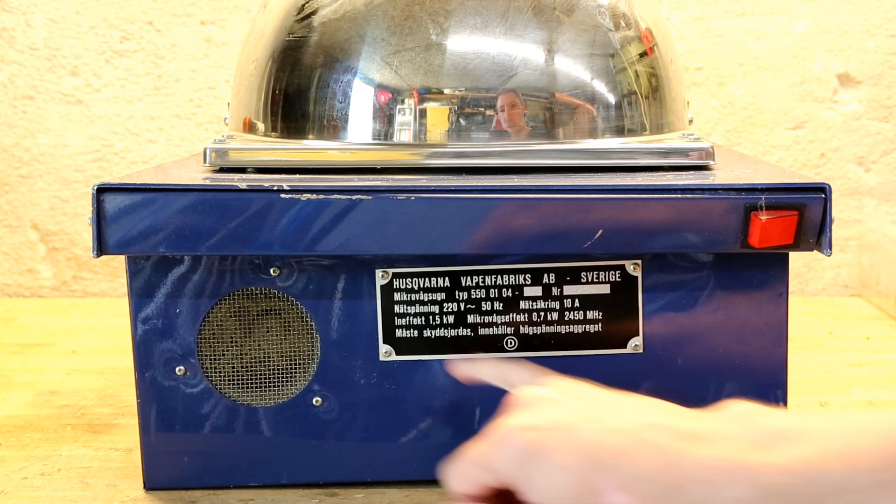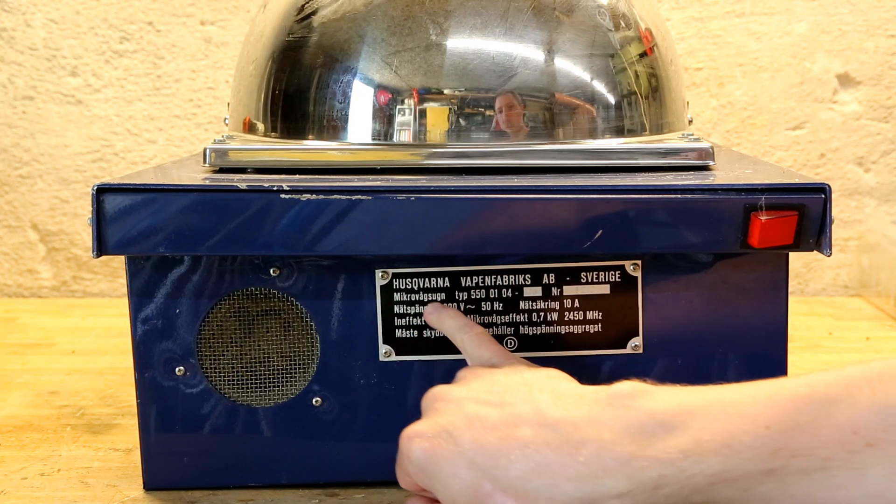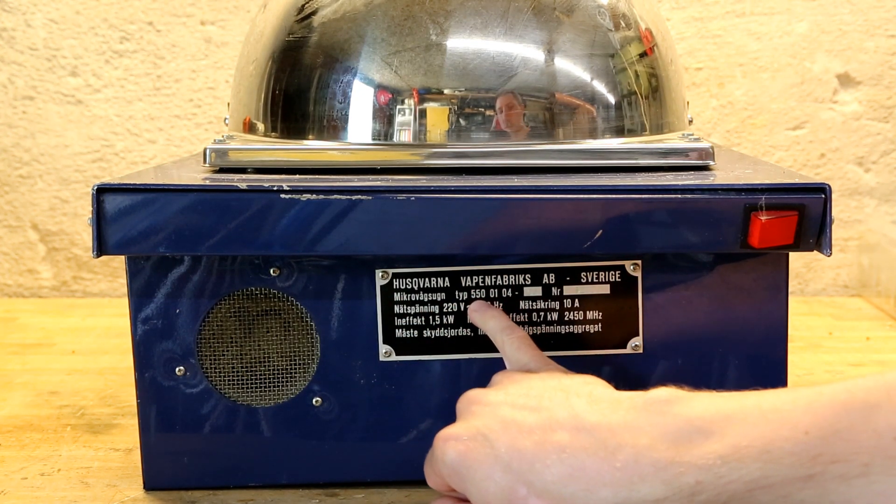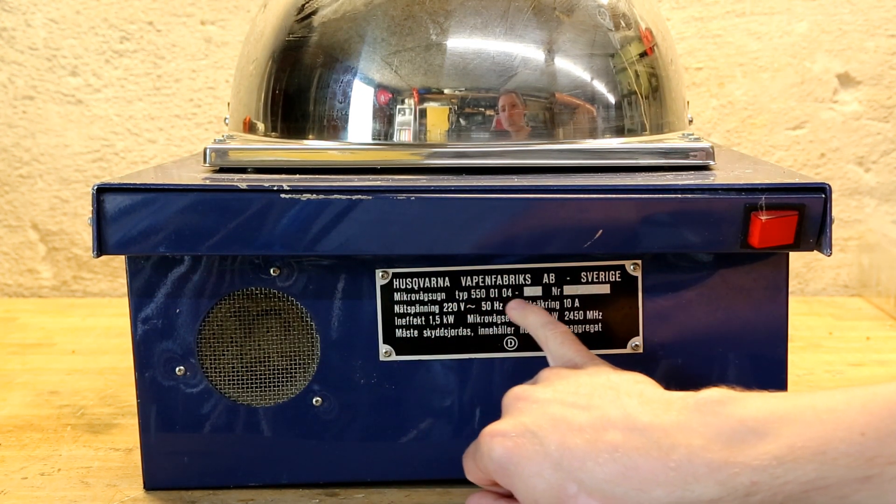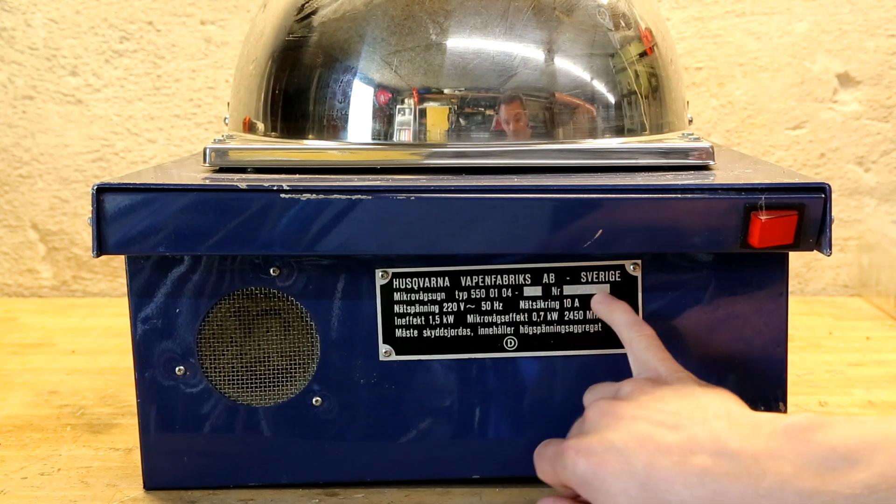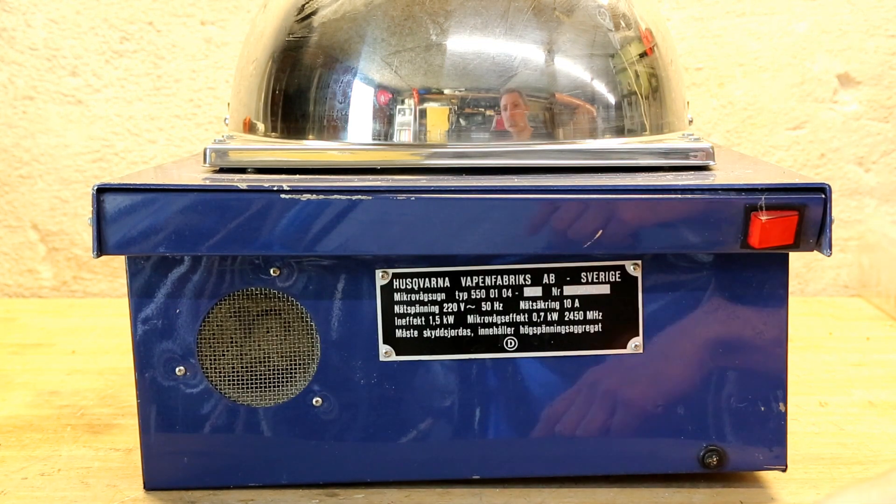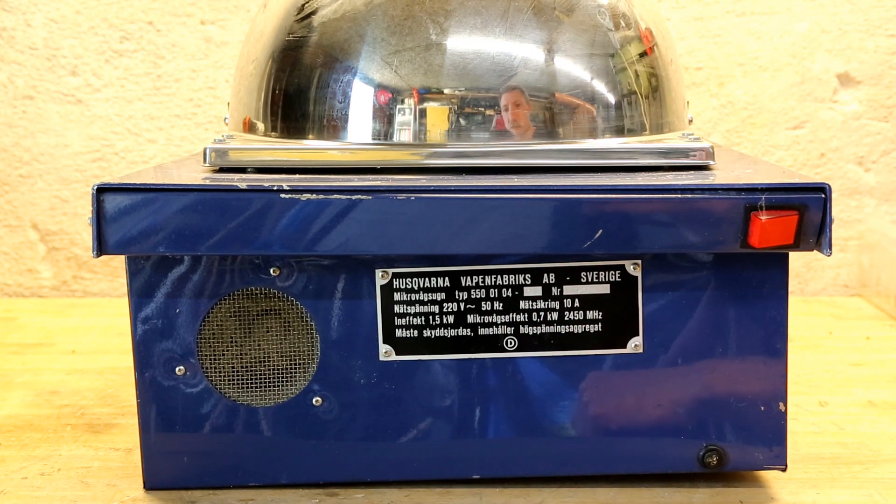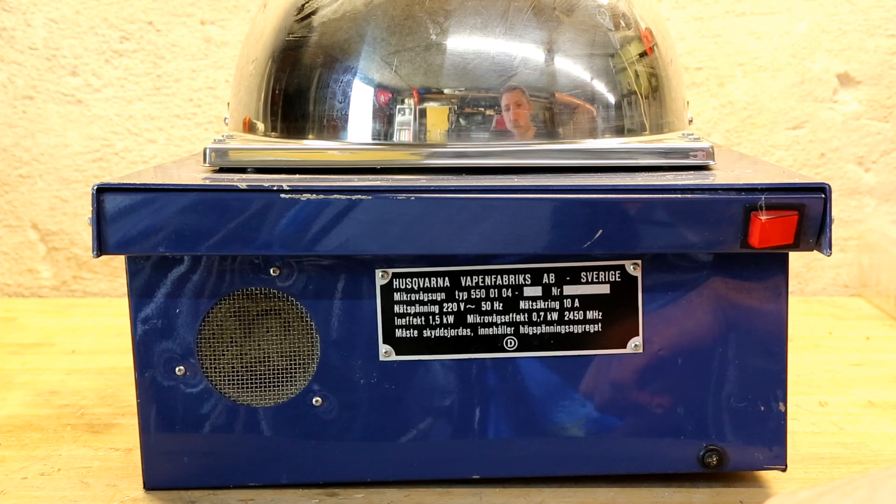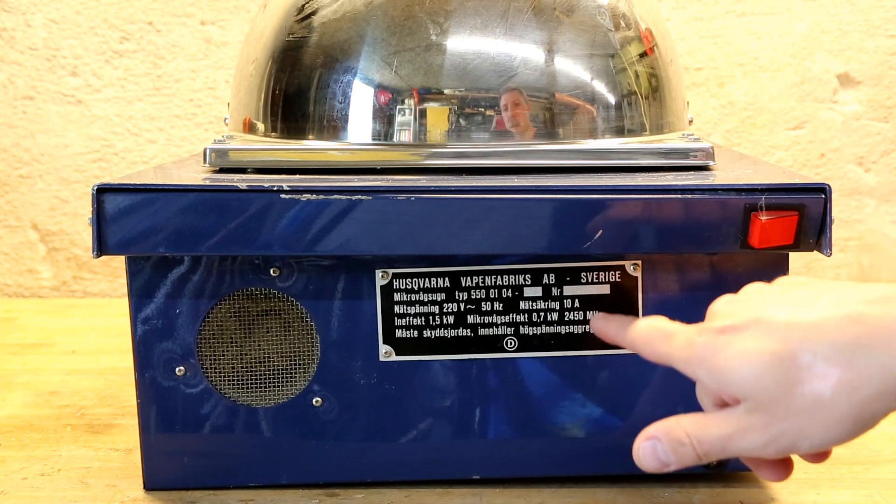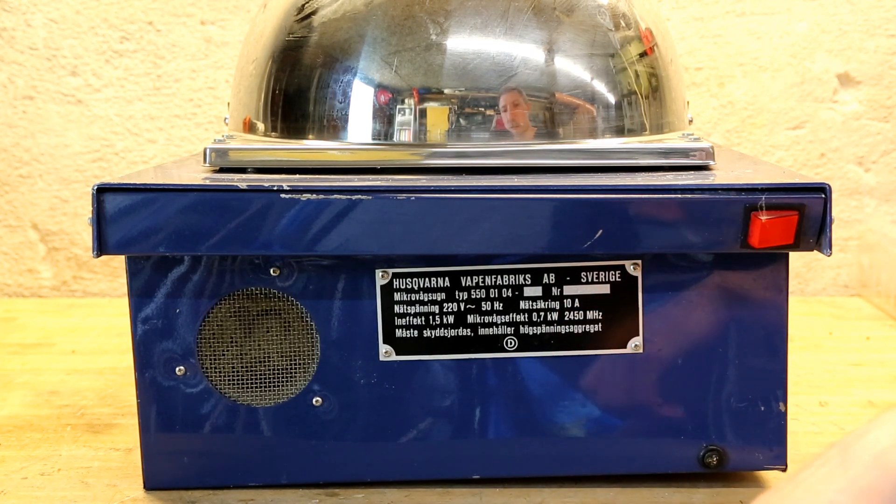Now, we can see here that it is a microwave oven, the type number 550-01-04-05, and its number 5210. It is meant for 220 volt AC at 50 hertz, and needs a fusing of 10 amps.